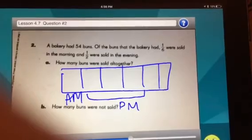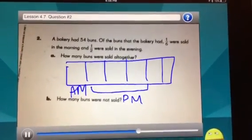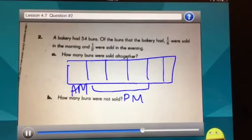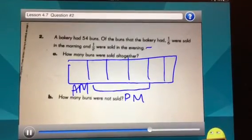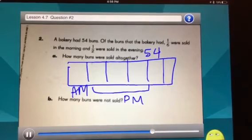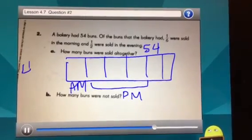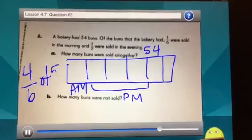So I can see that four-sixths were sold. My entire bar is worth 54 buns, so I need to find four-sixths of 54.